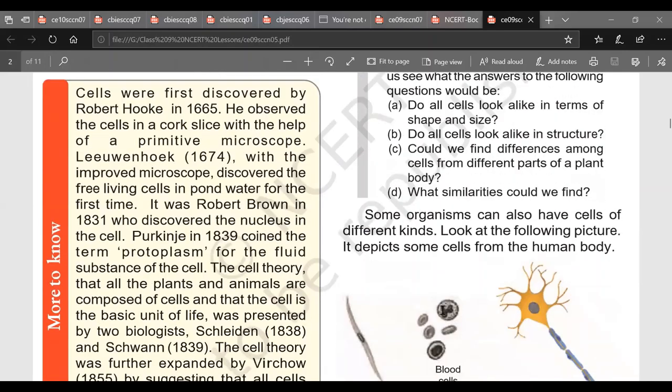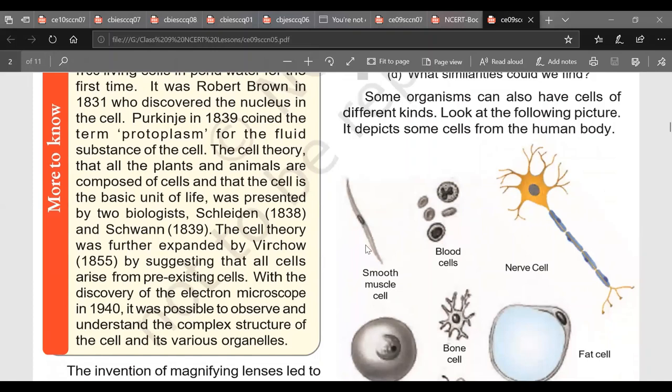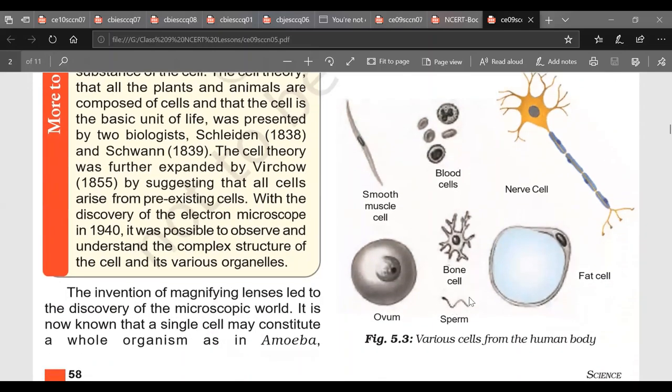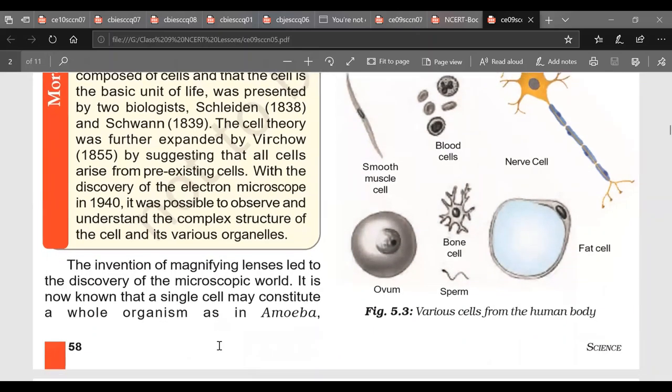Look at the following picture. So here we have smooth muscle cells. It has spindle shape. So there are circular blood cells, elongated nerve cell, very very swollen fat cell. There are irregular bone cells. Then we have ovum which has a lot of food stored in it and then elongated sperms. So it means cells can be of various structures, various size and various shapes.